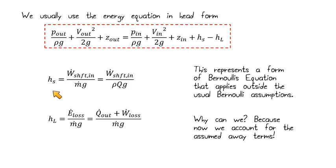So if I look at my shaft head, I could define this like this. It's equal to the power, the shaft power into my control volume, divided by m dot g, or rho q g, using volumetric flow units. And then the loss head, or the head loss, is equal to just the loss energy rate, divided by m dot g. And if we want to represent that loss, it's q dot plus the work loss, which would be due to things like friction and other effects there.